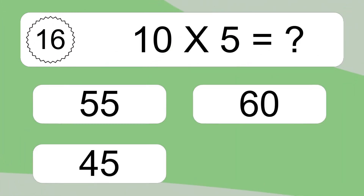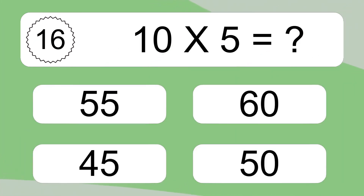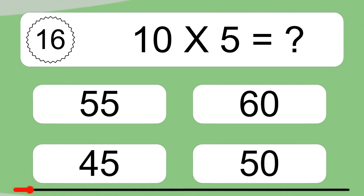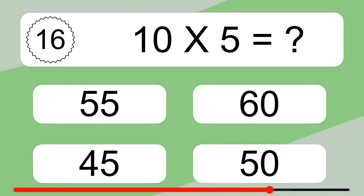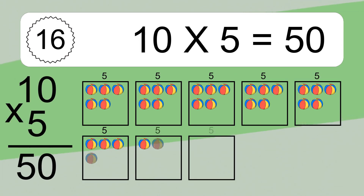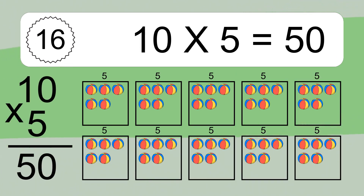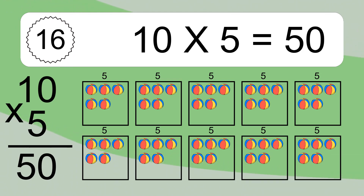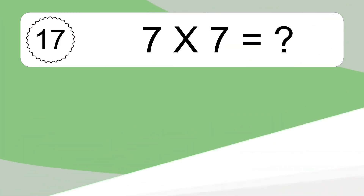10 times 5 equals what? 10 times 5 equals 50. We have 10 boxes, and each box has 5 colorful balls inside. If you count all the balls in all the boxes together, you will have 10 times 5 balls. This equals 50 balls.